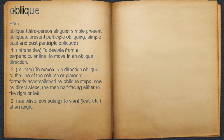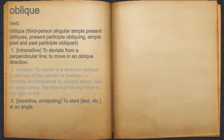Oblique. Verb. 1. Intransitive, to deviate from a perpendicular line, to move in an oblique direction. 2. Military, to march in a direction oblique to the line of the column or platoon, formally accomplished by oblique steps, now by direct steps, the men facing either to the right or left.